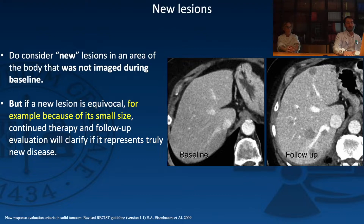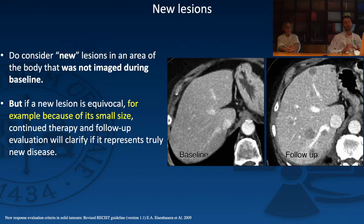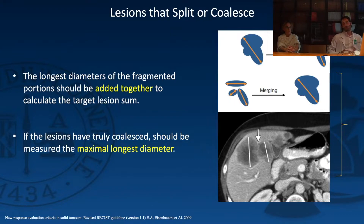New lesions may appear during treatment. If they do and were not present at baseline, you may consider progressive disease, but only if the lesions are more than 1 cm. You must confirm they persist at the next follow-up. Lesions may also split or coalesce: if they split, measure all individual diameters and sum them. For coalesced lesions, measure only the longest diameter.